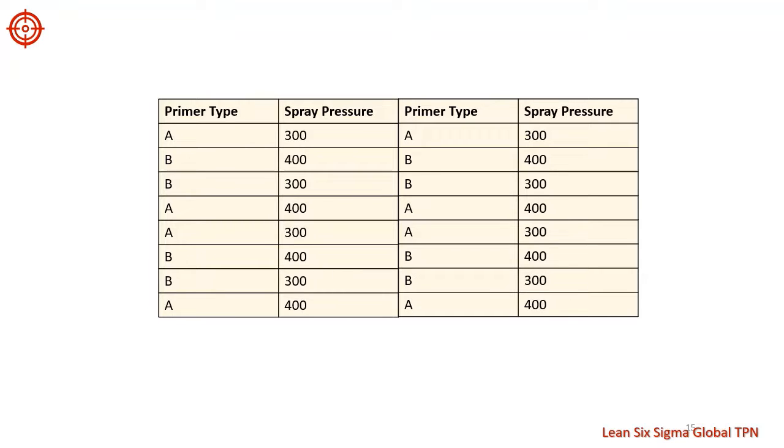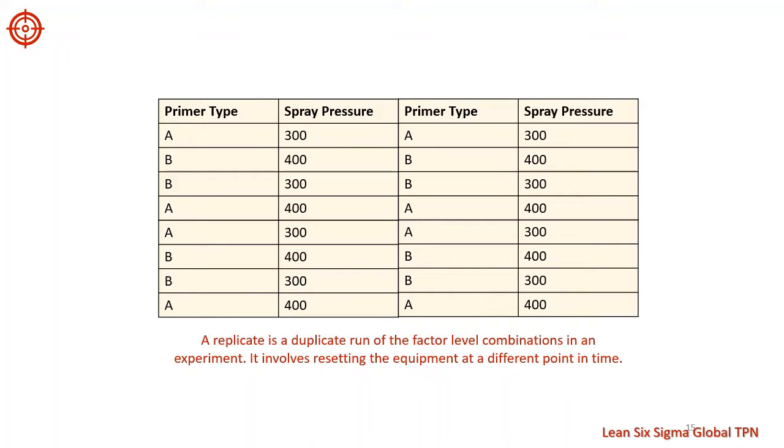The team decides to replicate each combination of primer type and spray pressure four times. A replicate is a duplicate run of factor level combinations in an experiment. This means that we reset the equipment with the factor combination settings at a different time in the experiment. This is different from a repeated measurement where we collect multiple observations from a single run of the experiment.